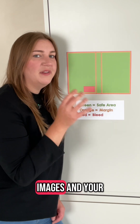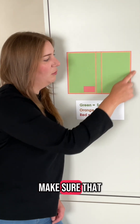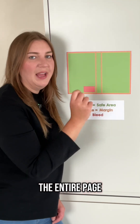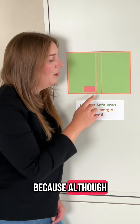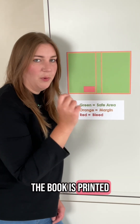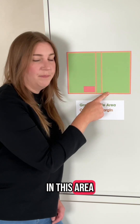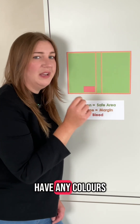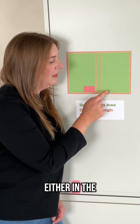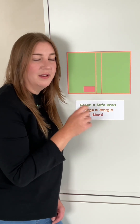When it comes to your background images and your colours, you need to make sure that you are filling the entire page, including the bleed. Because although the bleed is cut off once a book is printed, you still need to make sure you are filling in this area. If you have any colours or images stopping either in the margin or the bleed, then your book will be rejected.